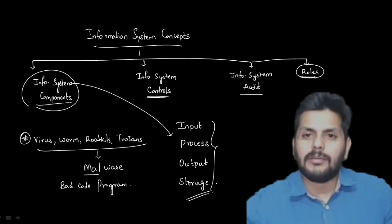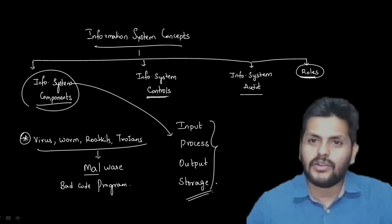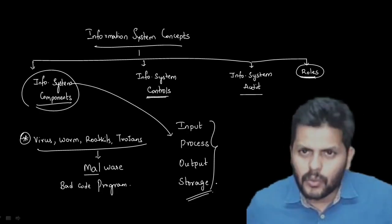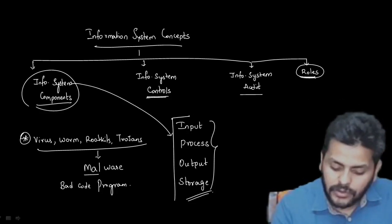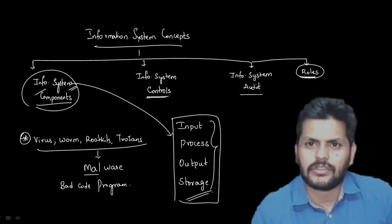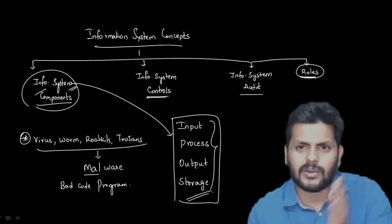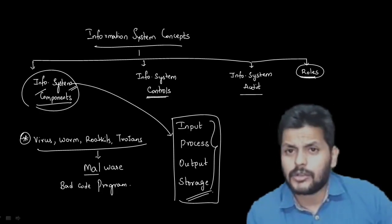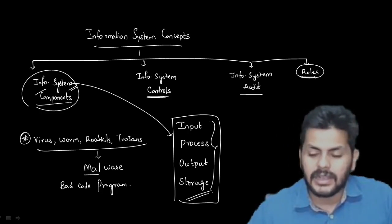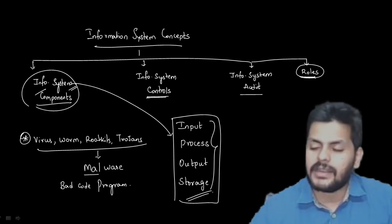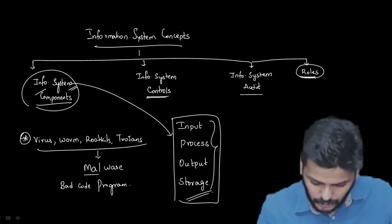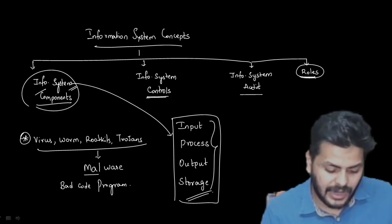It's not like human beings can't do this — the only thing is our storage is very limited and we tend to forget. Your system doesn't do that; it will store whatever you did. A system is a set of interrelated objects working together to achieve a goal, while information is processed, meaningful data used for making decisions. Information system is a combination of hardware, software, people, communication devices, networks, and data.